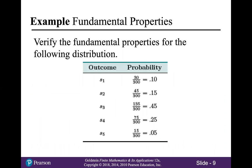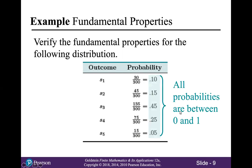So let's verify the fundamental properties for this distribution. First, we want to verify that each of these decimals is between 0 and 1, and you can see that they are. And second, we need to make sure that those numbers all add up to 1, and it's pretty easy to check that they do.